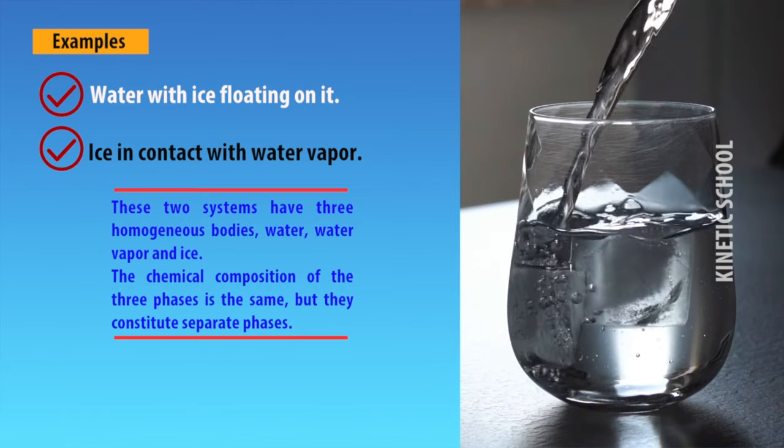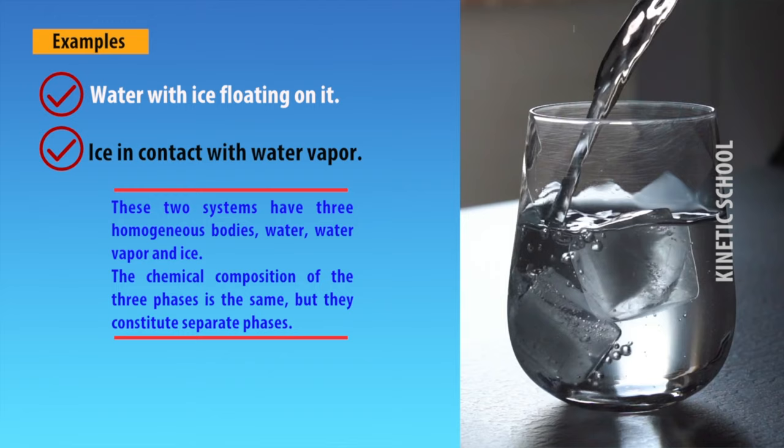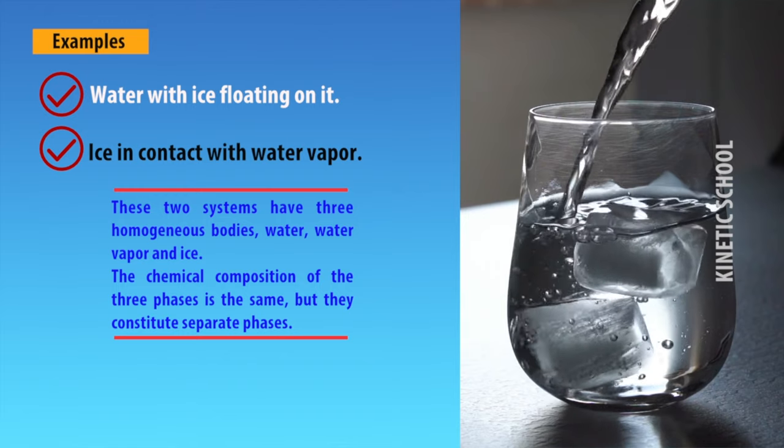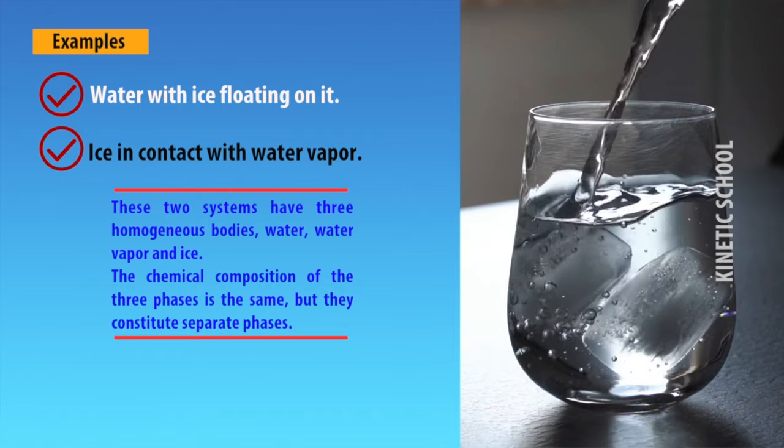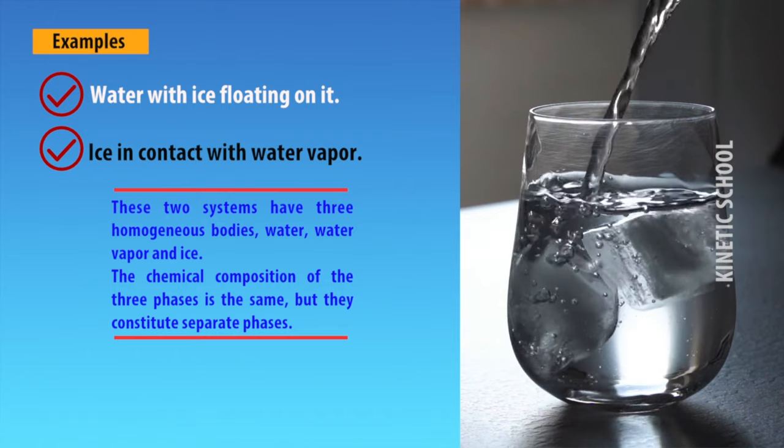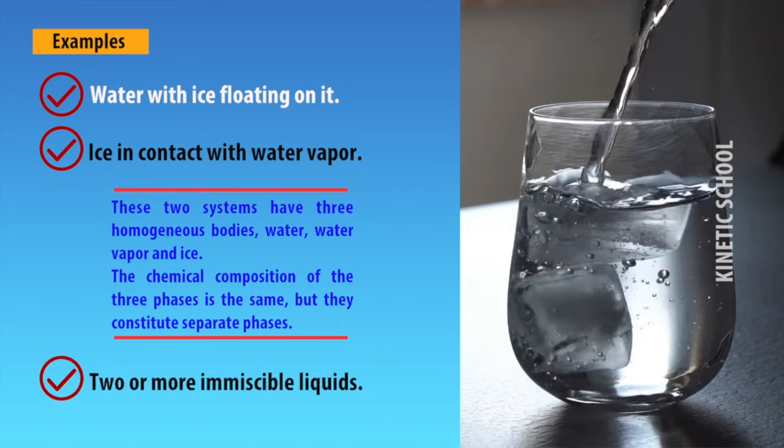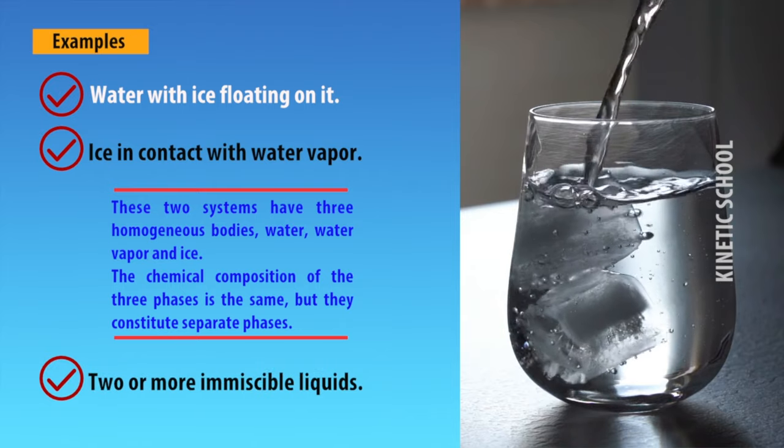Examples include water with ice floating on it, or ice in contact with water vapor. These systems have three homogeneous bodies such as water, water vapor, and ice. The chemical compositions of the three phases are the same but they constitute separate phases. Another example is two or more immiscible liquids.